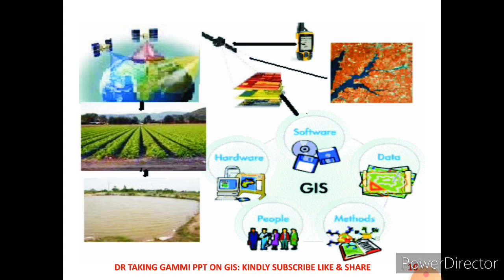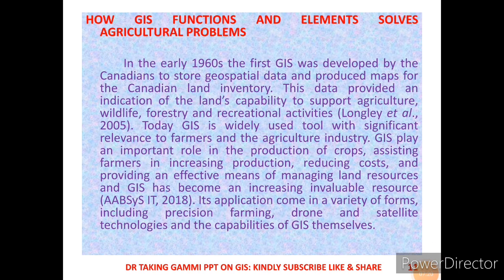With the help of GIS we can use art mapping and oceanography to see what is going on in an area, water logging, wasteland, and other important things. The requirements for GIS include hardware, software, data, methods, and people. All these together comprise what GIS uses as requirements — how its functions and elements solve agricultural problems.